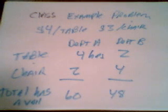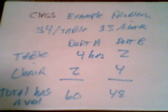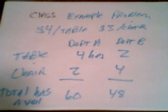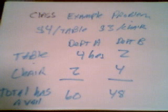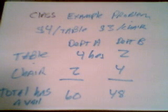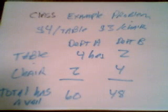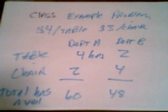Each table takes four hours of processing in Department A and two hours in Department B. Each chair takes two hours in Department A and four hours in Department B. We have 60 total hours available in Department A and 48 hours in Department B. The problem is how many tables and chairs should you produce this week to maximize profit?